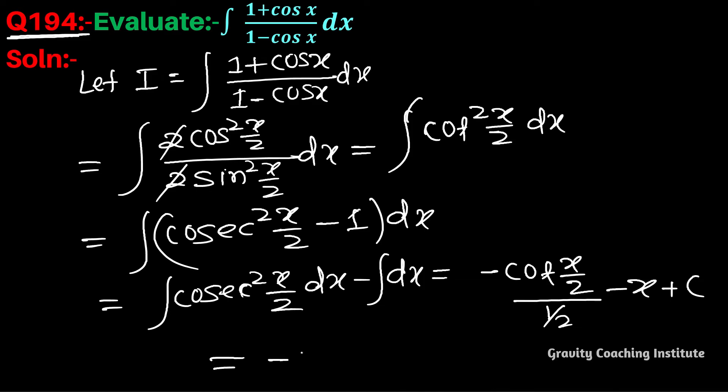So the final answer equals -2cot(x/2) - x + c.